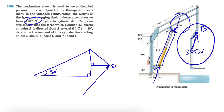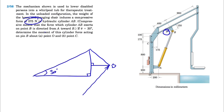We know theta is 30 degrees, and we need to determine the moment of this cylinder force acting on pin B. Part A asks for the moment about point O, and part B asks for the moment about point C. From the definition of the moment, we have moment equal to the cross product of r and F, where r is the position vector connecting the point we're finding the moment about.